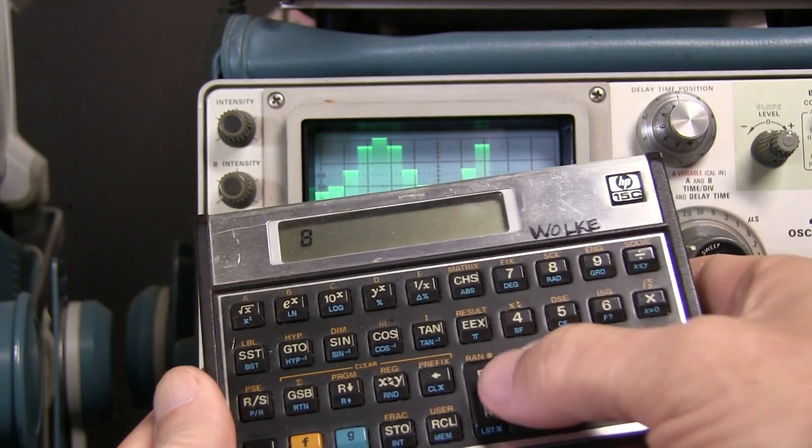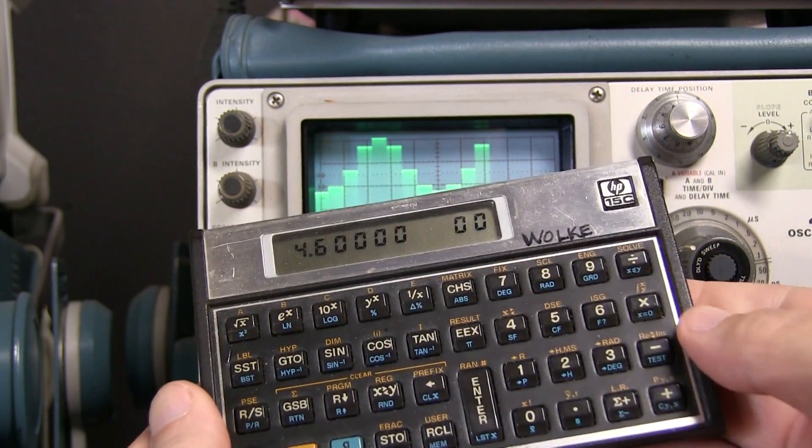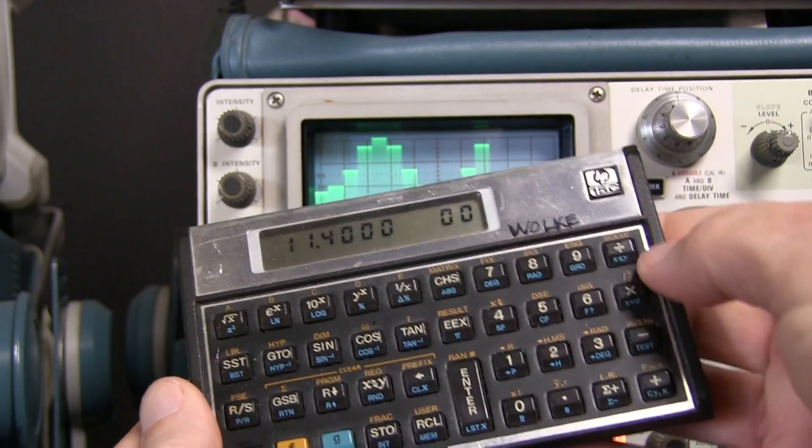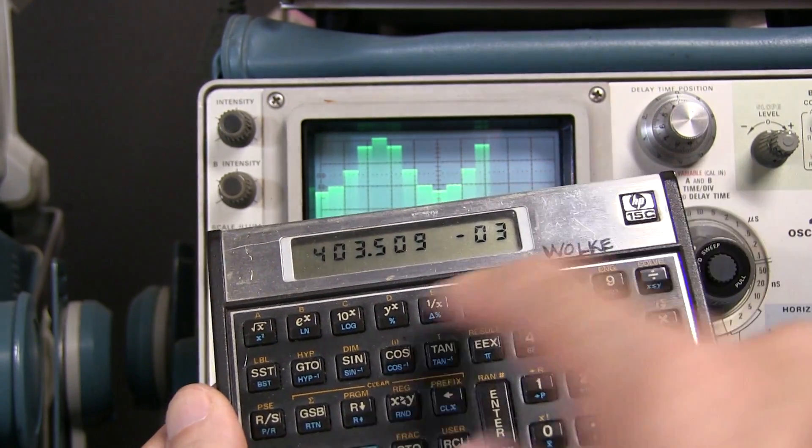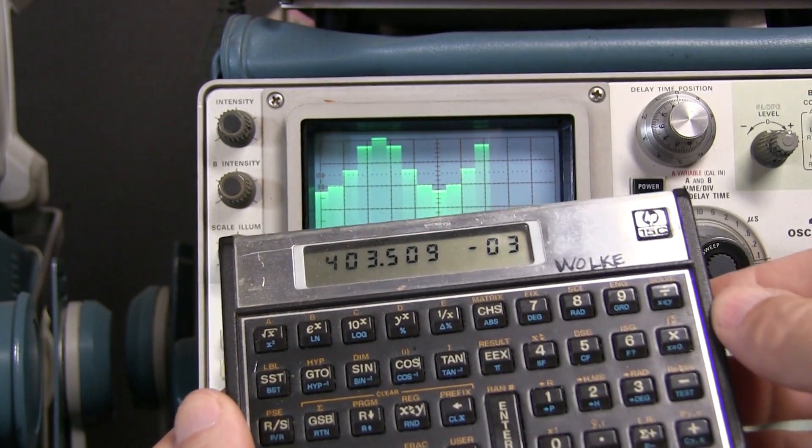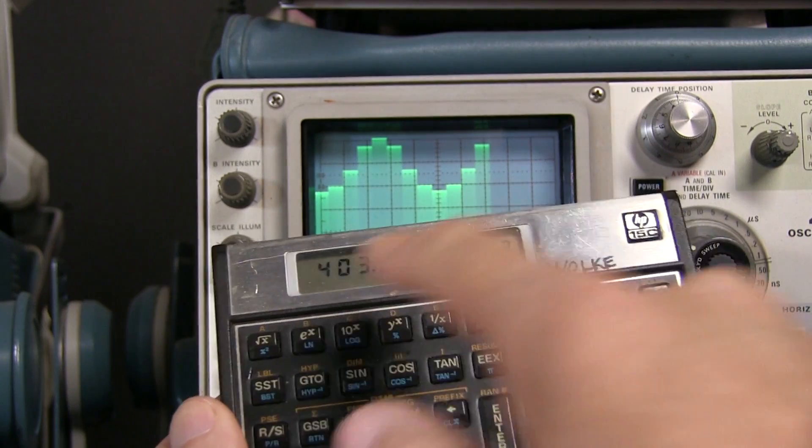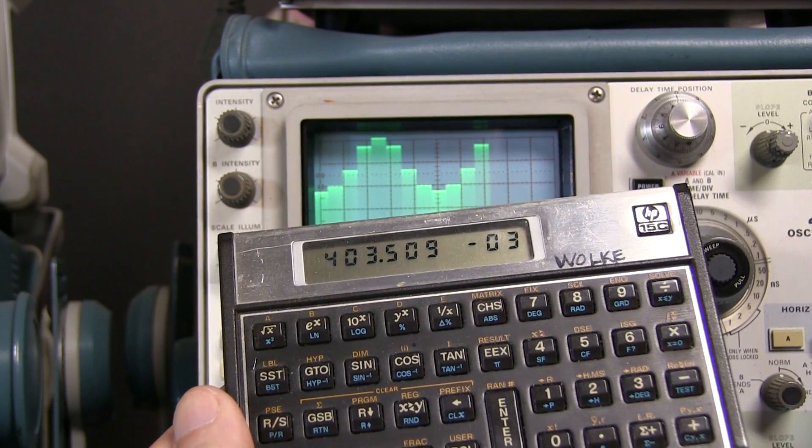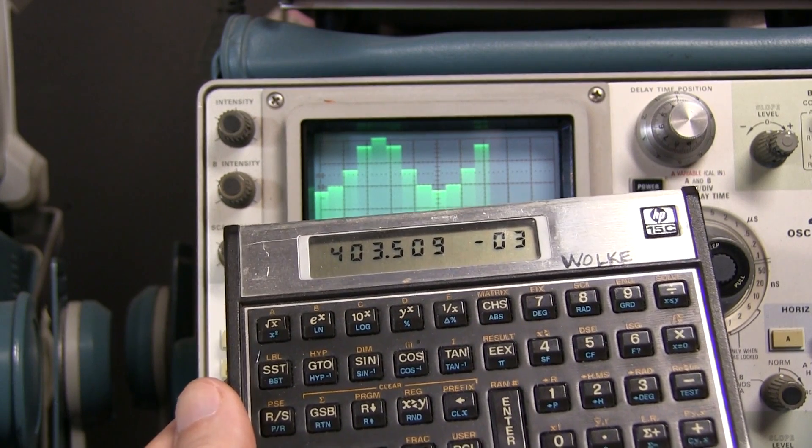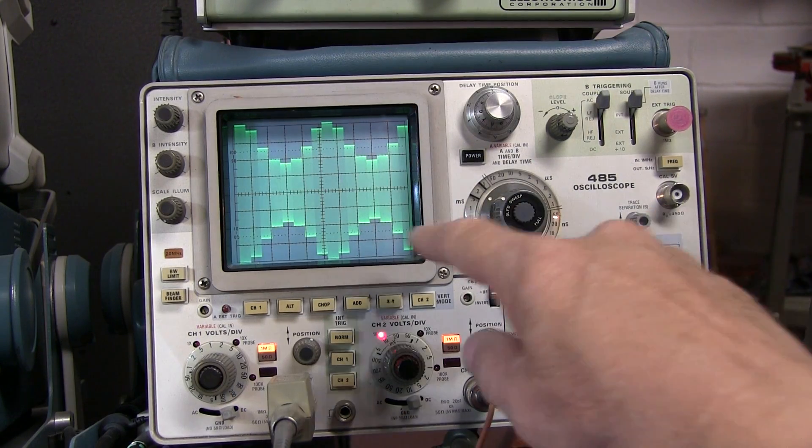So now we have 8 minus 3.4, and then we can do 8 plus 3.4 and divide those. And again, we're very close to the other one since we were at 3.4 divisions instead of 3.3. 0.403 modulation index or modulation percentage of 40.3%.